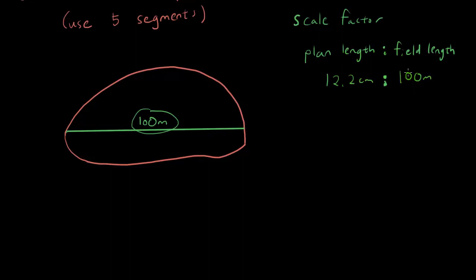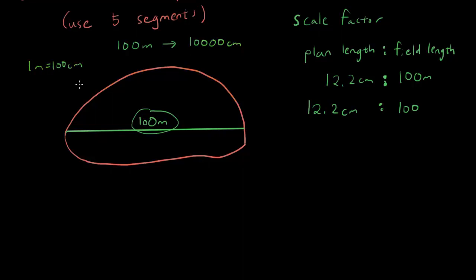We need both sides to have the same units, so let's put 12.2 centimeters to 100 meters. To convert 100 meters to centimeters, multiply by 100, giving us 10,000 centimeters. Now both sides have the same units, so we can drop the units. It's just 12.2 to 10,000.